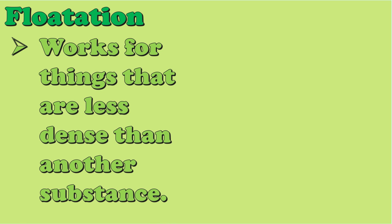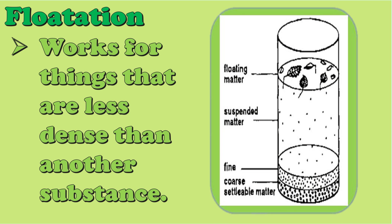Another way of separating mixtures is known as flotation. It works for things that are less dense than another substance, like leaves that would float in water. When the water you are about to use has floating particles like leaves, you can easily separate them because they are floating. When washing rice, there are smaller particles of rice bran floating in the water, and you can easily separate them.